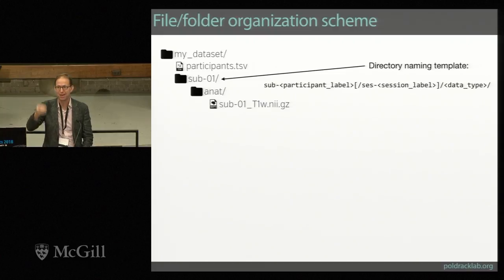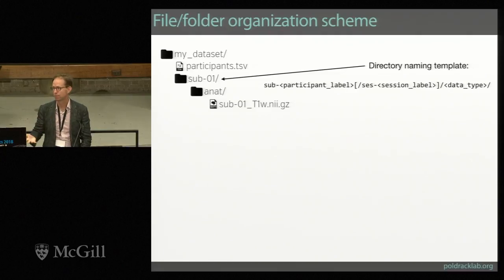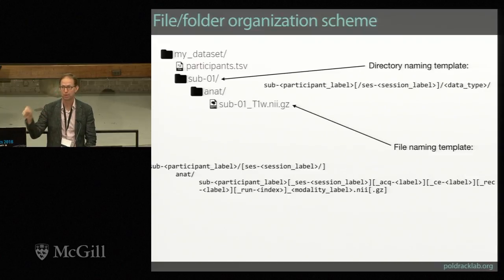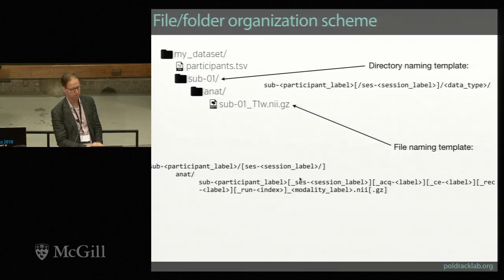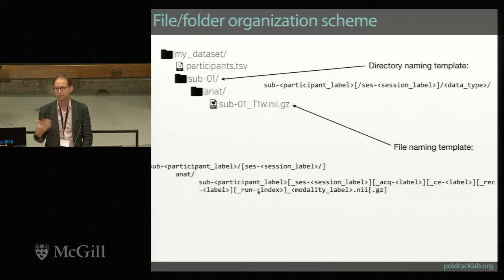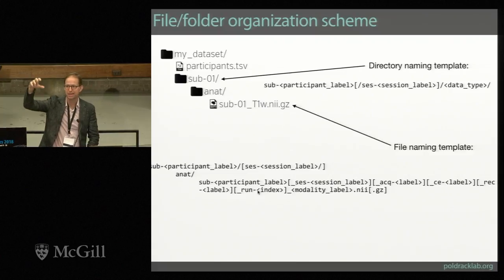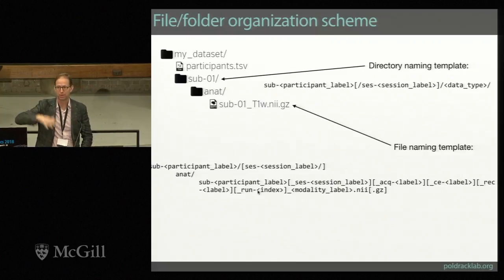We have templates for how to name directories and files, designed to maximize human readability while enabling the power we need. For example: sub-participantLabel, session-sessionLabel, data type, and then for individual files, we also have a scheme. Some parts are required, like the participant label and the modality label. But there's a bunch of optional stuff you can add — for example, if you did 10 different inversion times for your T1-weighted image, you can express that in the file name, and it'll also be in the metadata.